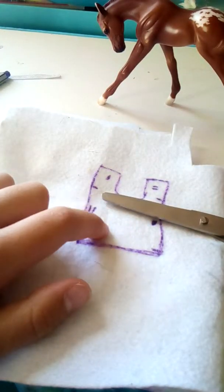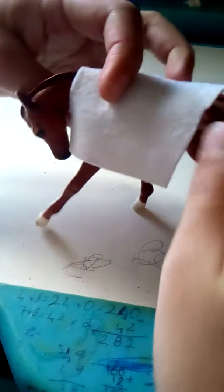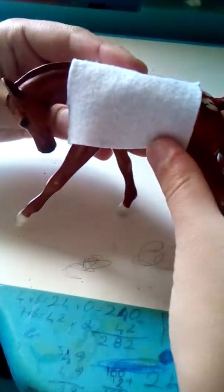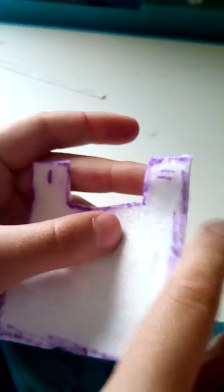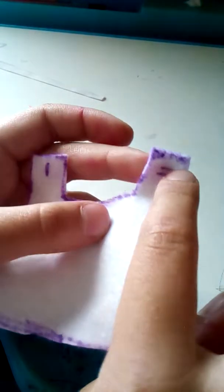Now, cut this shape out. Once you've cut your blanket out, check if it fits on your Breyer foal. Now, cut where you made these marks.